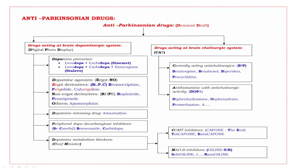Next, dopamine agonists. The mnemonic is 'ERGOT,' with bold letters E, N, O. E: ERGOT derivatives. N: non-ERGOT derivatives. O: others. ERGOT derivatives use the mnemonic BPC — bold letters B, P, C. B: bromocriptine. P: pergolide. C: cabergoline.